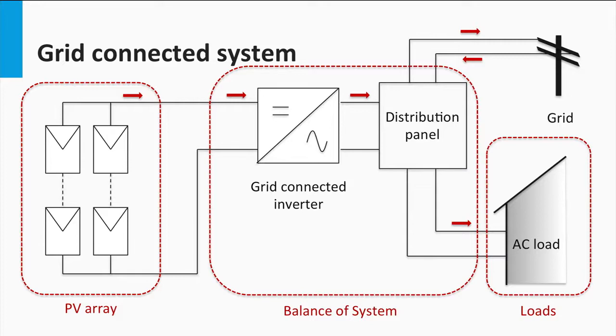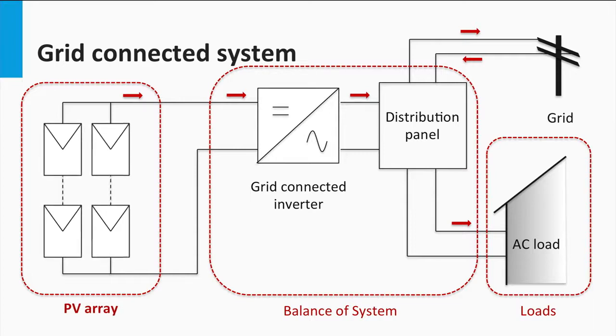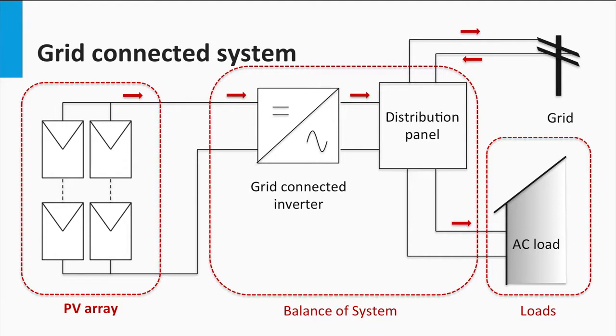As discussed before, the grid-connected PV system has these important PV system components. The PV array is an interconnection of modules that supplies the required photo-generated power to the system. Power rating of the array is determined based on the system design.